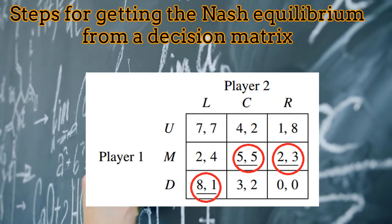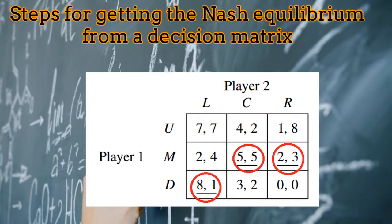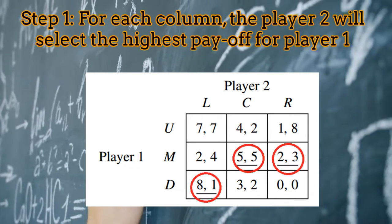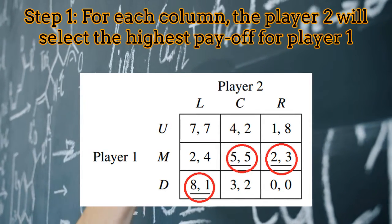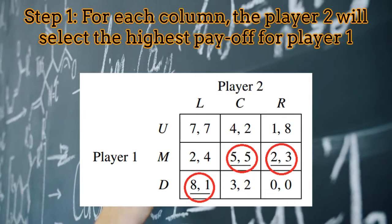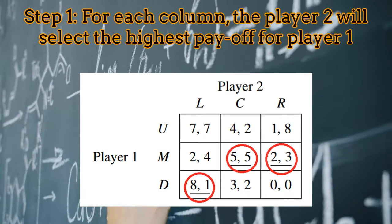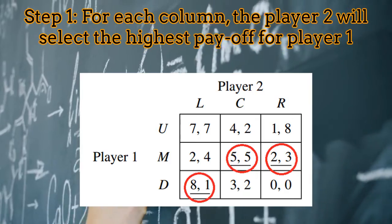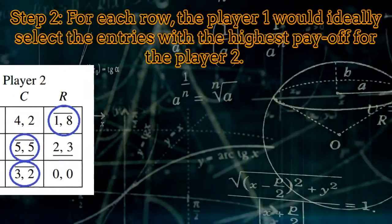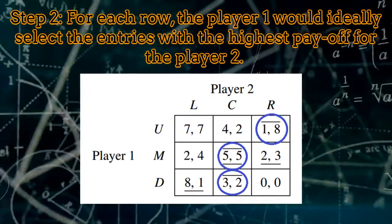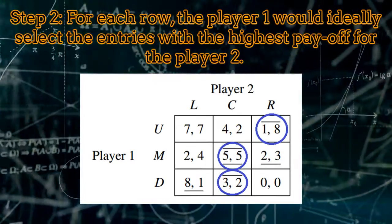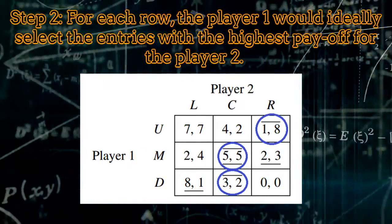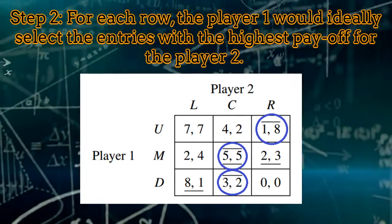Let's start with this example with two players. For each column corresponding to the possible decisions taken by player 2, select the highest possible payoff for player 1. For each row corresponding to the decisions of player 1, select the highest possible payoff corresponding to player 2.